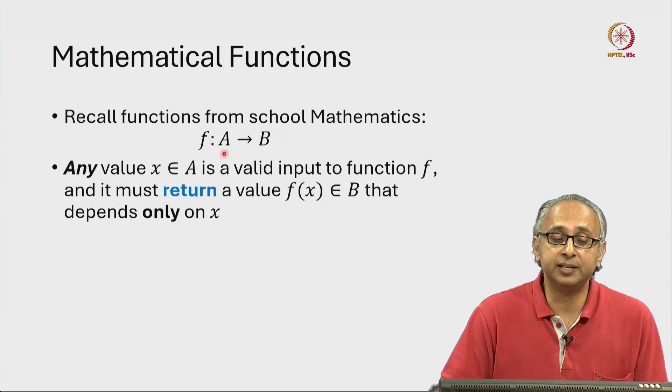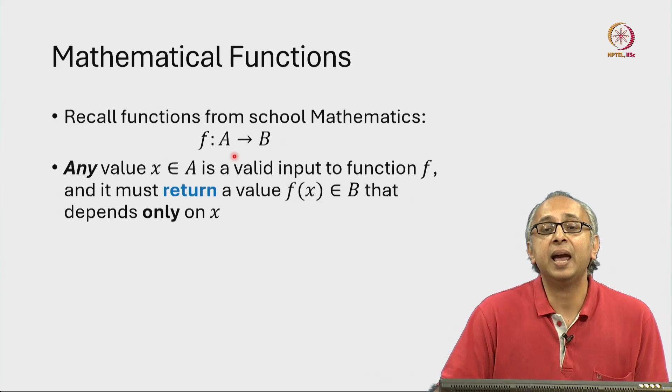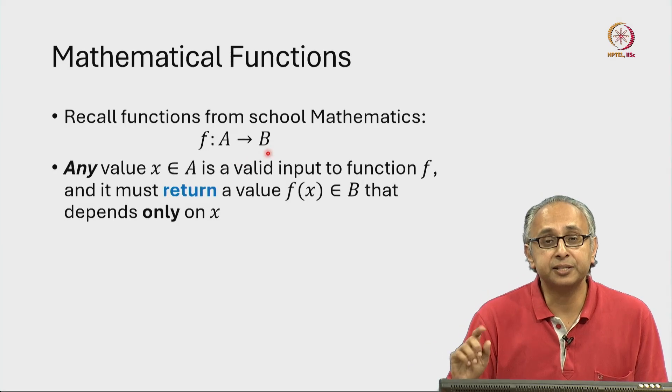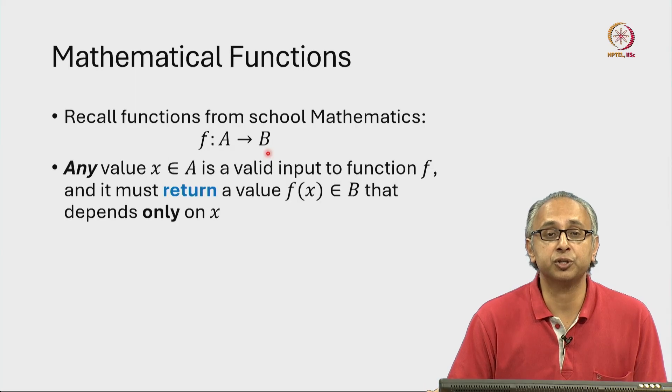So the function f takes an input that comes from set A and it produces an answer that belongs to set B. That is the first property that the function must satisfy.